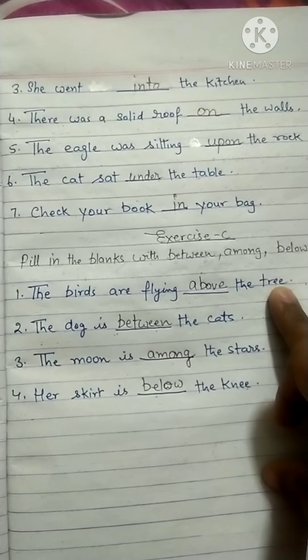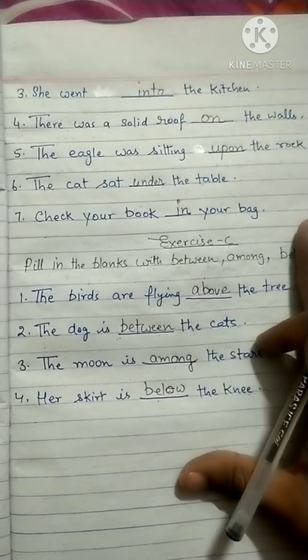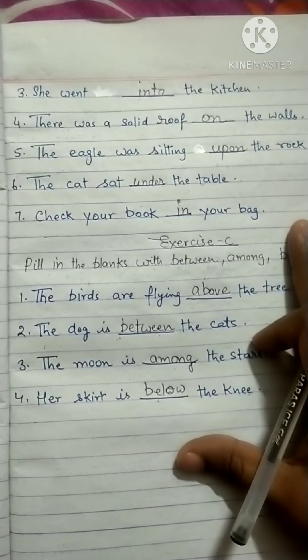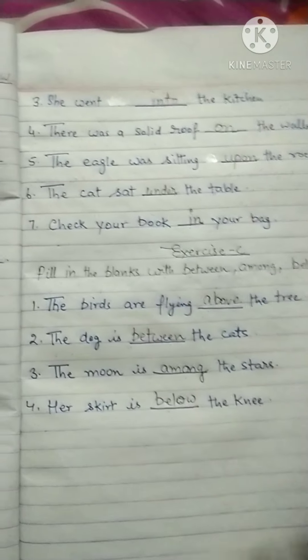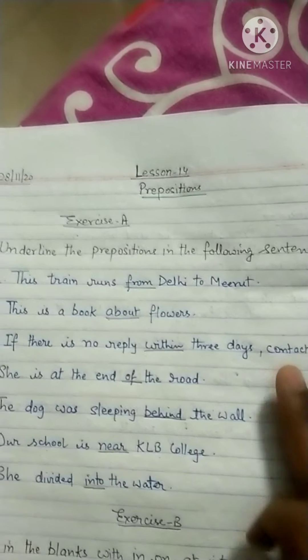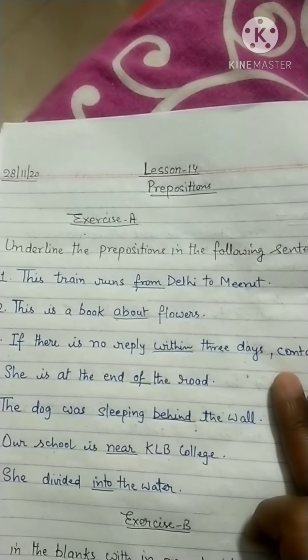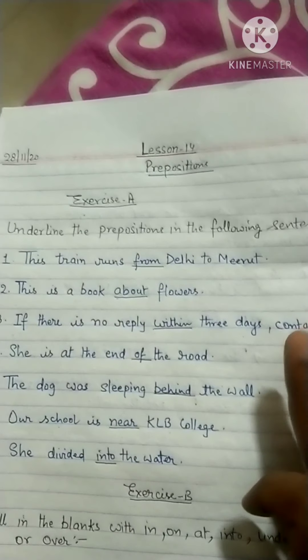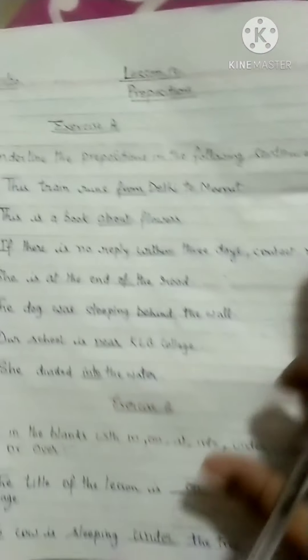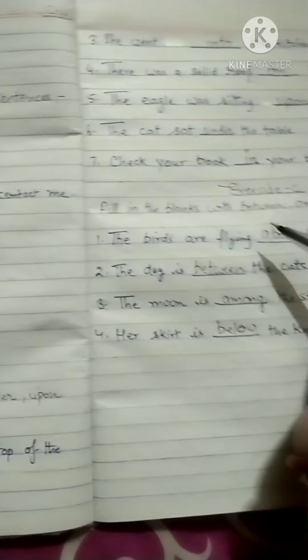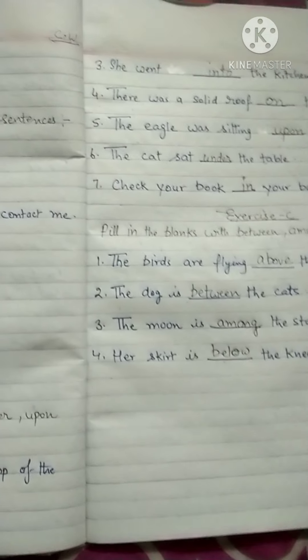Write it properly, neatly and nicely, without any spelling mistakes. Check that you have filled it properly, underlined correctly, and there are no spelling mistakes. Your homework is to learn the exercises and revise them properly. You have to do Exercise A, B, and C. Thank you.